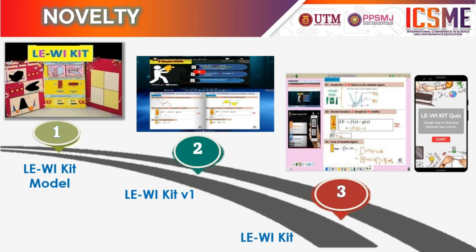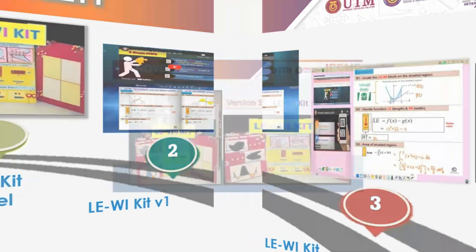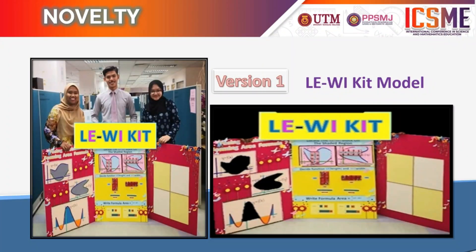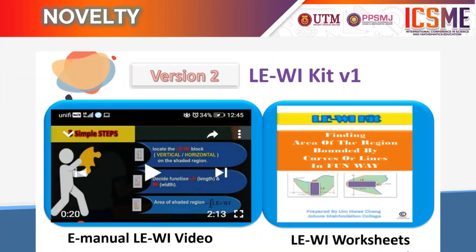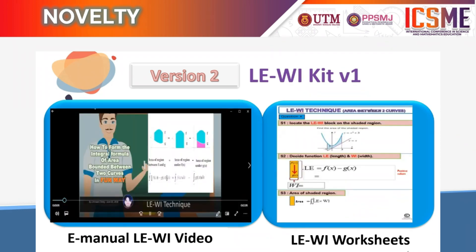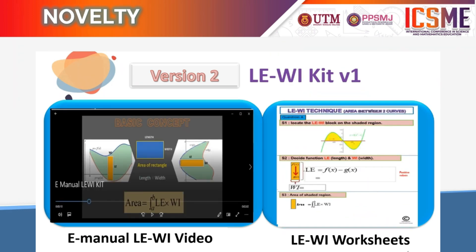Our innovation has undergone three versions as an improvement measure to make the innovation more flexible and bring the most effective impact. Version 1: LevelKid Models. These models were constructed using two pieces of polystyrene, fabric, softboard, and Levy blocks. This version is suitable for lecturers when conducting tutorial classes, which can provide a clear visual for assisting students to form integral formulas of area between curves. Version 2: LevelKid V1. This innovation was upgraded with the help of technology in early 2020. In this version, LevelKid has been modified in the form of video along with a worksheet in the form of an e-flipbook and e-manual video built using the Animaker application.